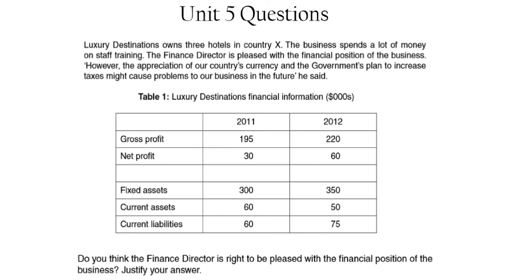I've picked a question from a past paper just to demonstrate some of the information we've gone through. This one is based on Luxury Destinations, which owns three hotels in Country X. The finance director is pleased with the financial position of the business; however, the appreciation of the country's currency and the government's plans to increase taxes might cause problems in the future. With this, you can only use the information they give you — they haven't given you sales revenue, so you cannot calculate the margins, and they haven't told you how much of the current assets is stock, so you cannot calculate the acid test ratio.